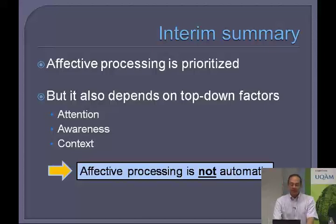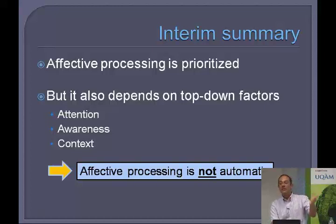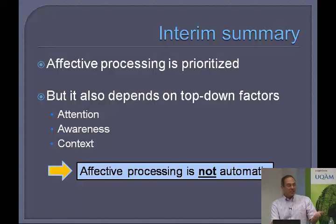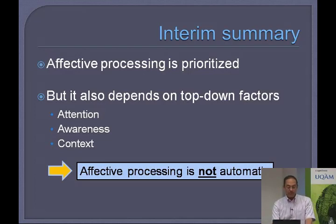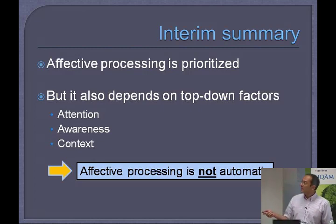To summarize: affective processing is certainly prioritized — we and many others have found this — but it also depends on top-down factors such as attention, awareness, and other contextual effects. My suggestion, unlike other proposals, is that affective processing is not strongly automatic.